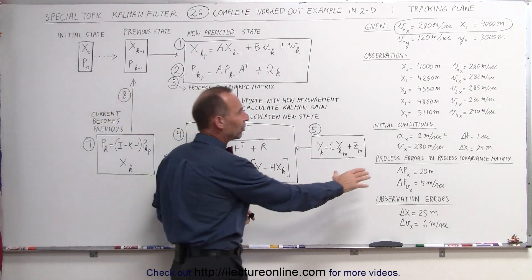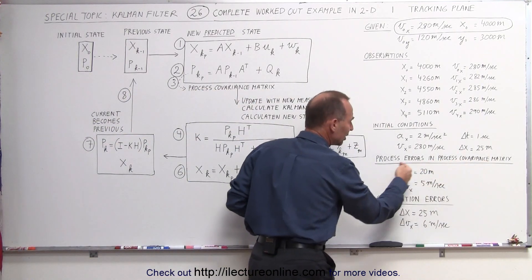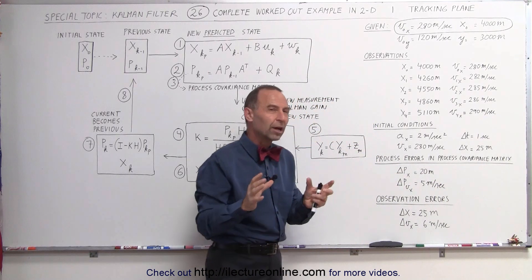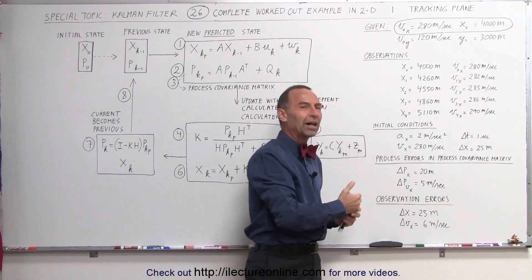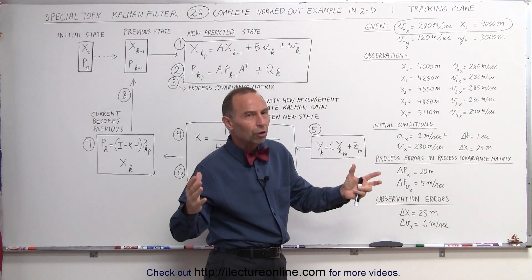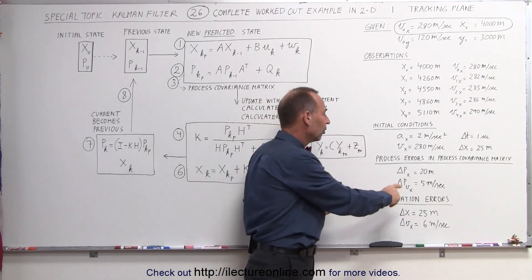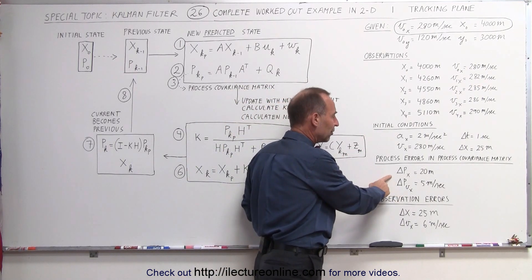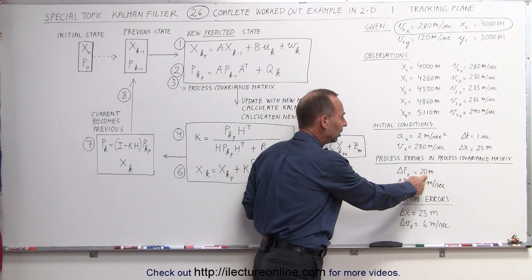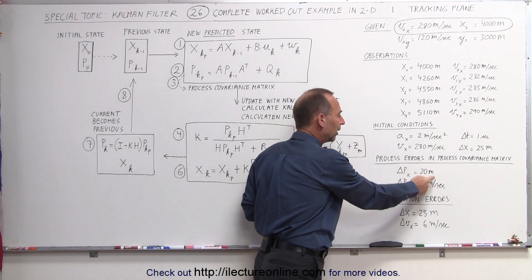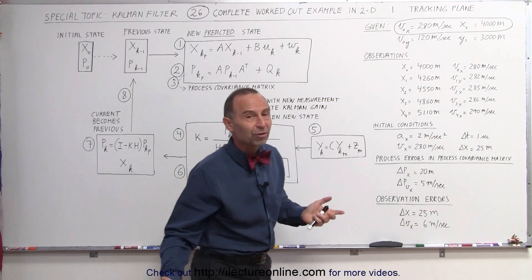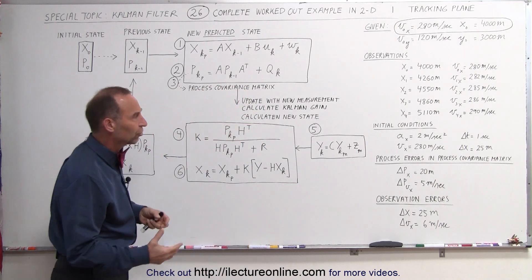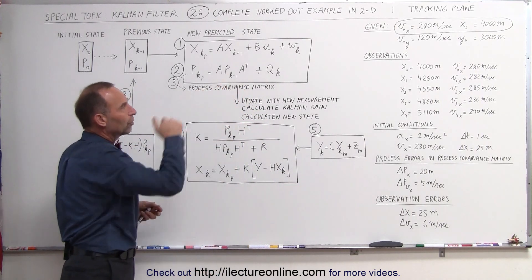The process errors in the process covariance matrix need to be determined and usually we start out by just simply giving them some initial value that seems reasonable, not too large, not too small, but encompassing. So here we're going to start out with our covariance matrix, have initial position of 20 meter error, initial velocity of a 5 meter per second error. That's probably a pretty good state to start with under the conditions.